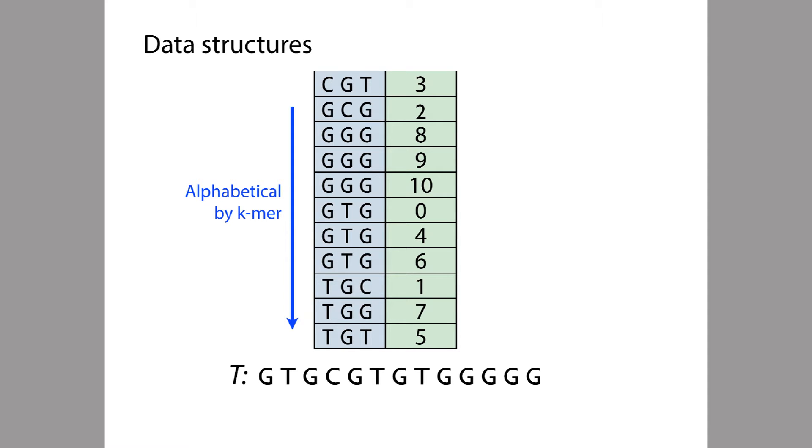So now this is our index data structure. It's simply a list of 3-mer offset pairs ordered alphabetically by 3-mer. So now how do we query this index? Say we have a pattern P from which we extract a 3-mer, and we'd like to query the index with this 3-mer. And the way we're going to do this is with something called binary search.